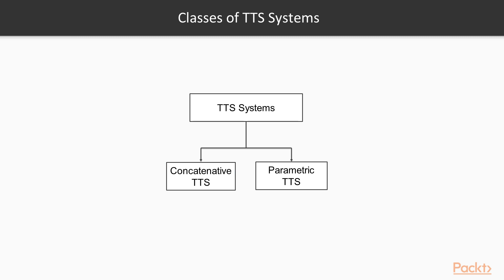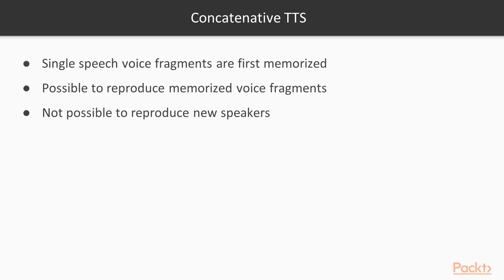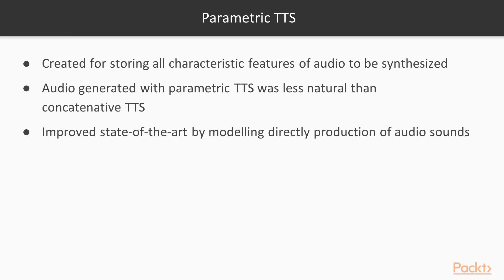Concatenative TTS and Parametric TTS. In Concatenative TTS, single-speech voice fragments are first memorized and then recombined when the voice has to be reproduced. However, this approach does not scale because it is only possible to reproduce the memorized voice fragments, and it's not possible to reproduce new speakers or different types of audio without memorizing the fragments from the beginning. In Parametric TTS, a model is created for storing all the characteristic features of the audio to be synthesized. Before WaveNet, the audio generated with Parametric TTS was less natural than Concatenative TTS.